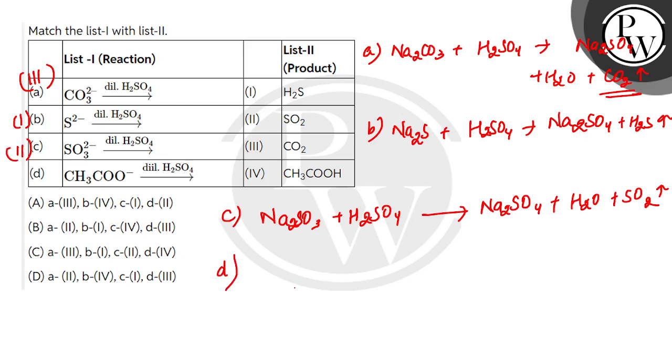And what is written in D? CH3COO- acetate. So let's take sodium acetate CH3COONa. So here will be Na2SO4 plus CH3COOH.